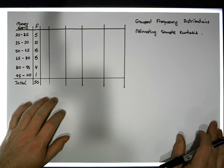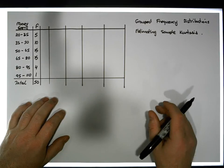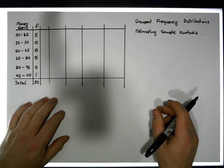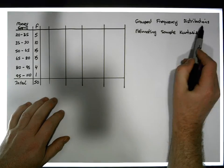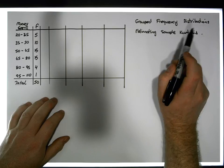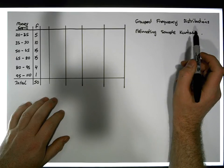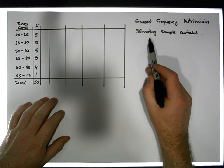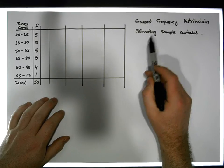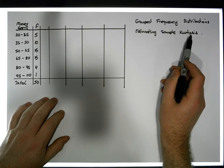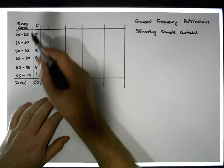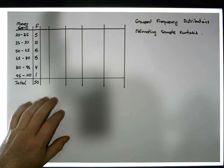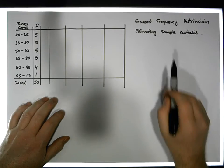Hi guys, this is Jonathan Lambert with the Mathematics Development and Support Service at National College of Ireland. This short video, another in our series dealing with grouped frequency distributions, is going to concentrate on how we can numerically estimate the sample kurtosis associated with a grouped frequency distribution.